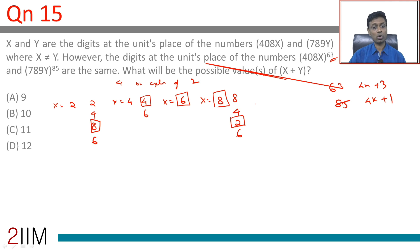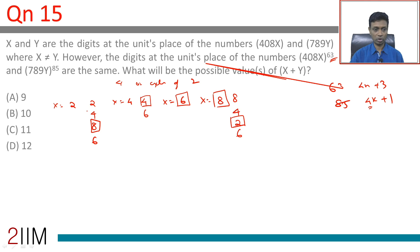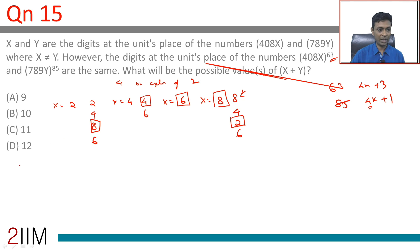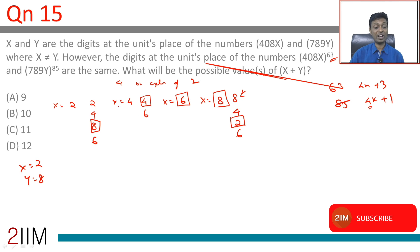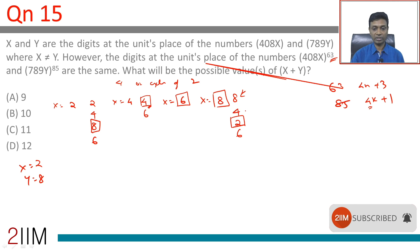Now let us think about y. Y would also have to be an even number. We are looking at 4k plus 1 as the cycle position. If x is 2, it ends in 8, so we need 789y to the power 85 to also end in 8. That gives us the possibility x equals 2, y equals 8. If x were 4, then 408x to the power 63 ends in 4. That is not possible because the power 85 is of the form 4k plus 1, so x cannot be 4.